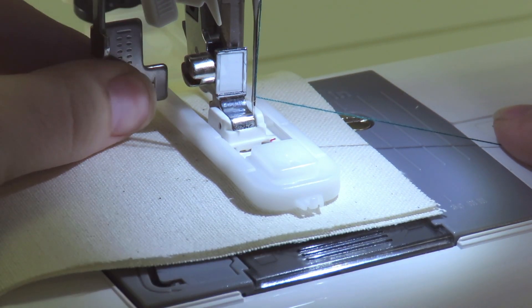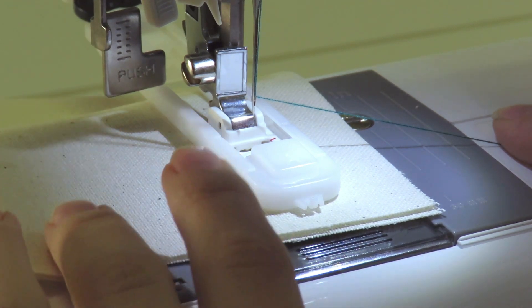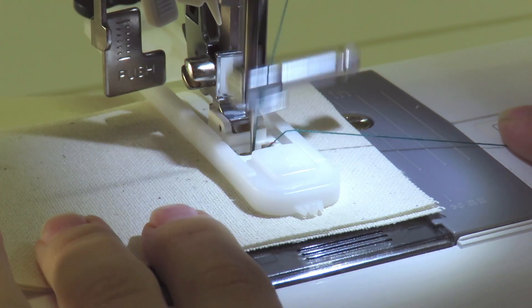Pull down the buttonhole lever and push it back slightly. Press down on the foot controller until the entire buttonhole is stitched.